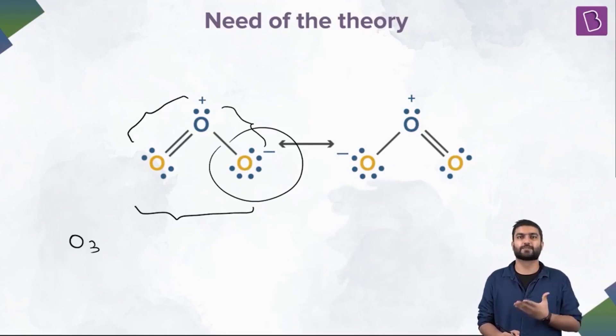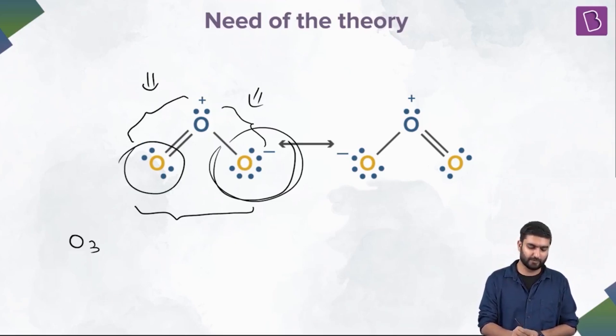So the result was that essentially the charges were equally distributed, and the bond lengths were coming out to be the same. Now that is quite bizarre, because I don't understand anything that is written on the screen right now. What is that dotted bond? What does it mean? So let's go back.